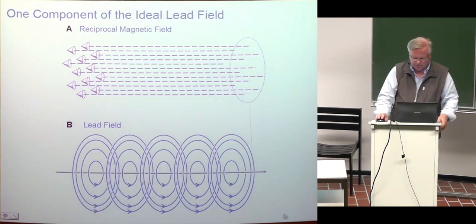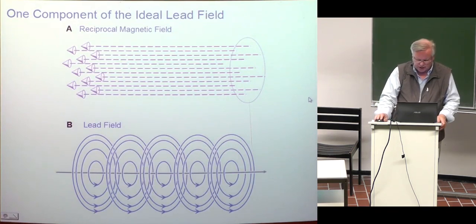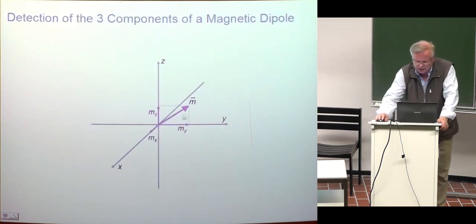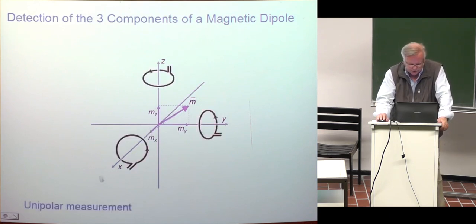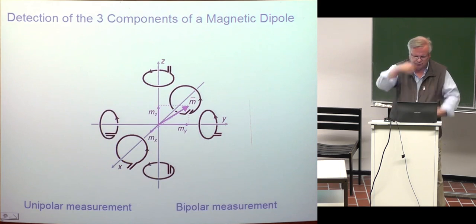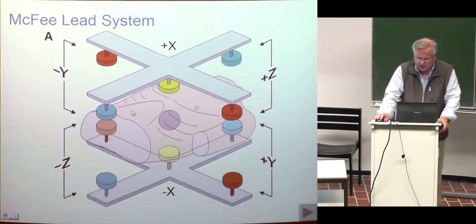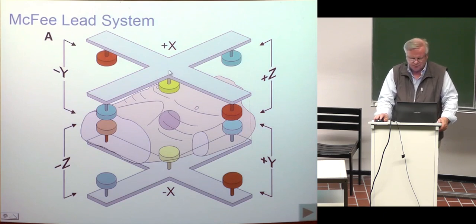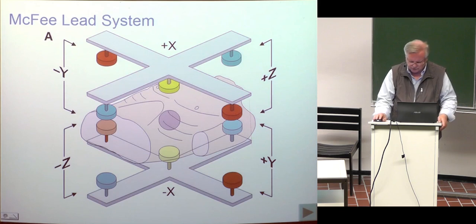To detect the magnetocardiogram, measuring the magnetic dipole requires three orthogonal lead fields. The magnetic dipole has three components: X, Y, and Z. They may be measured unipolarly with three coils, but better signal quality is obtained with bipolar measurements having two coils on both sides of the source. The first magnetocardiographic lead system was suggested by McFee — theoretically okay, but practically it would not work because it collects a lot of noise.